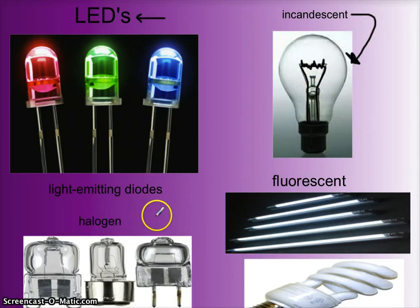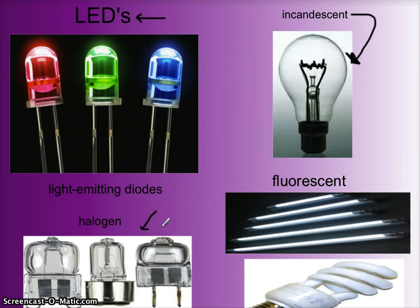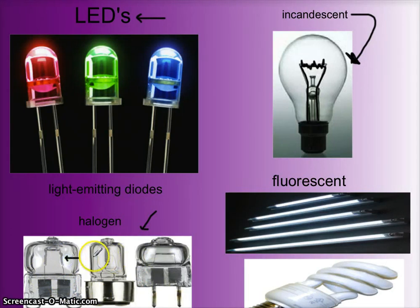That brings us to halogen bulbs. Since the 1980s, halogen bulbs have been in existence, and there are more and more on the market. Halogen bulbs are still incandescent, but they don't burn out as easily — that's the key advantage. They still come from a hot light source, but the filament is a little sturdier than the one in a normal light bulb.